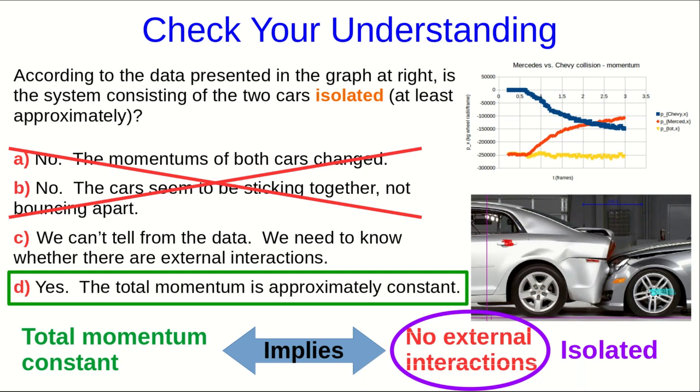Sometimes it's easier to think about whether there should be external interactions, and perhaps it's clear that there must be, or it's clear that there must not be. Other times, and I would say this is one of those times, it's not really clear from the situation whether there would be strong external interactions. But we can always measure inertias and velocities relatively easily. And so, usually, our best experimental evidence for whether a system is isolated or not is whether its momentum changes.